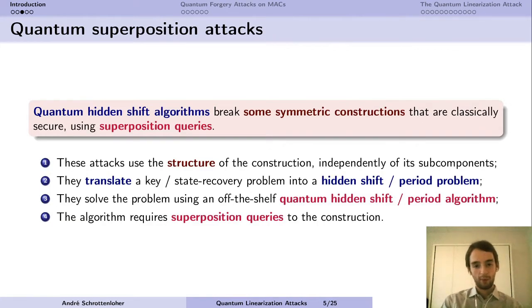So these quantum superposition attacks work usually this way. You have a symmetric construction and you're going to target its structure. So usually you can abstract out all the subcomponents that you use in there. It's really the structure that is attacked and it has a classical security proof, but there is a way to use a quantum hidden shift or hidden period algorithm, a dedicated one, to break this construction using superposition queries. So basically you translate a key recovery problem or a state recovery problem into a hidden period problem.